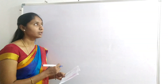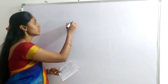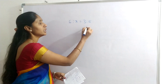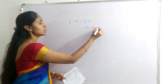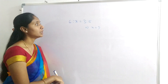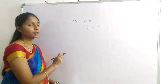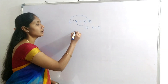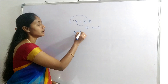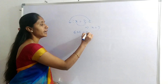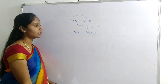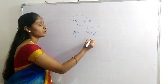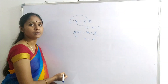Next question: 6 is to X equals 3 is to 5. Find X. From the proportion rule, product of means equals product of extremes: 6×5 = X×3. So 30 = 3X, giving X = 10.